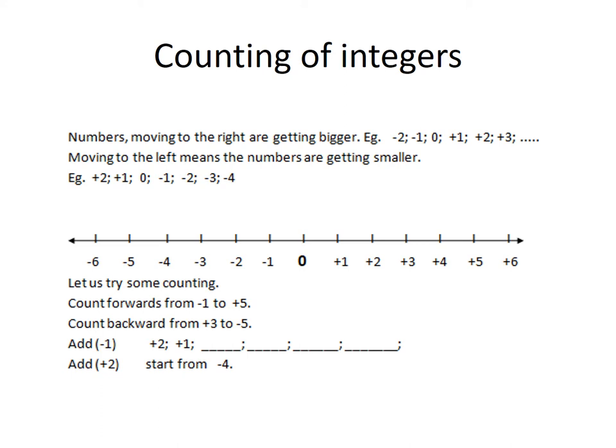Now I've got a little exercise for you. We're going to add negative 1 to each of the numbers starting from positive 2: positive 2, positive 1, 0, negative 1, negative 2, negative 3. The next one, we're going to add positive 2, starting from negative 4: negative 4, negative 2, 0, positive 2, positive 4.